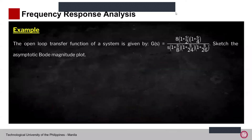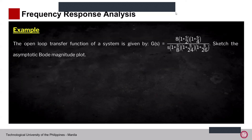Let's have another example. This time we are only asked to solve for the Bode magnitude plot. For this given transfer function, it is already in time constant form, so we go directly to finding the initial MdB. The expression that remains after the corner frequency terms is 8/S.